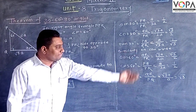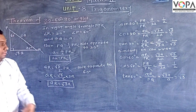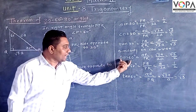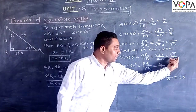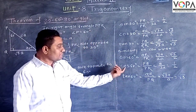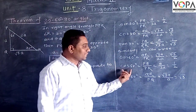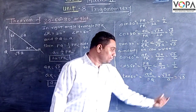In a similar way we can write: the sine 60 degree angle is √3 by 2, cos 60 degree is 1/2, and tan 60 degree is √3.